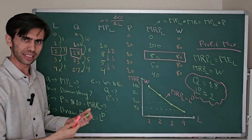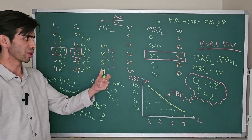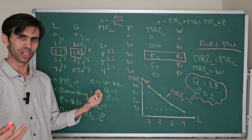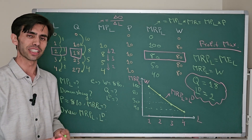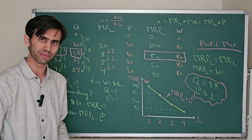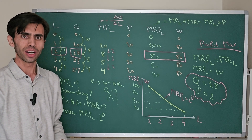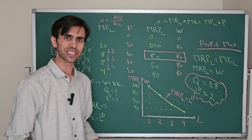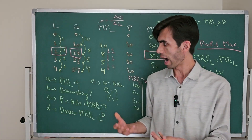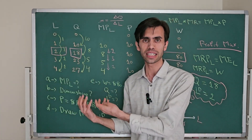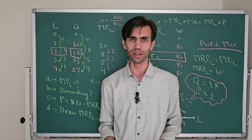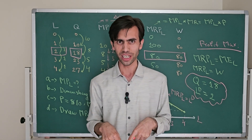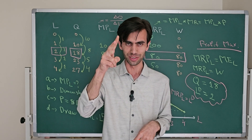So that was a practical example on labor demand based on marginal revenue product of labor, marginal productivity, wage rate, and price of output in the market. I hope you enjoyed this example and learned how to solve a practical labor demand problem. Please subscribe to my YouTube channel — see you in the next videos.